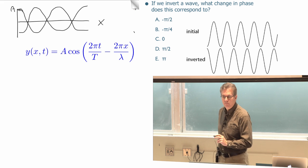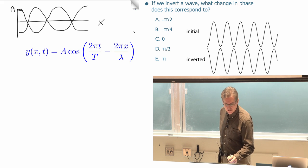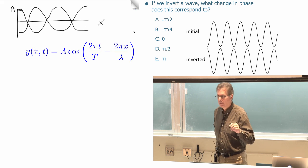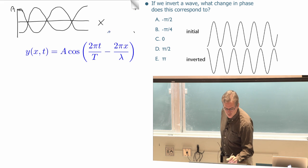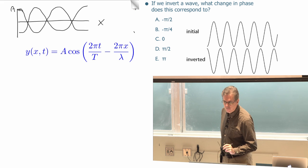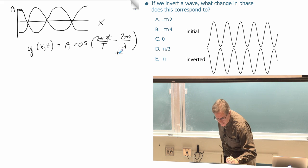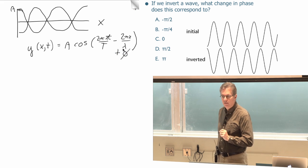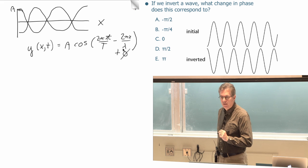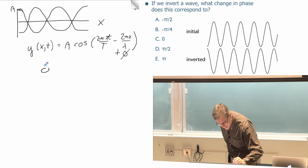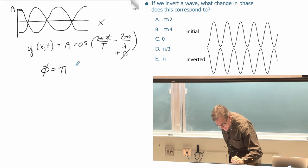So to do this one where it's exactly opposite, what would we need to do to make this cosine? What do we have to put inside here to make cosine minus 1? Add. So think at x equals 0 and t equals 0, how do you get a minus 1? The phi. So we're going to add a term phi in there.